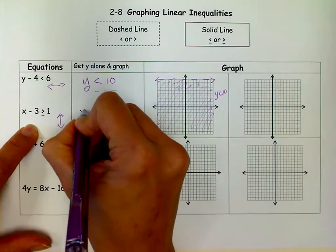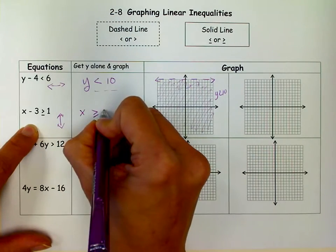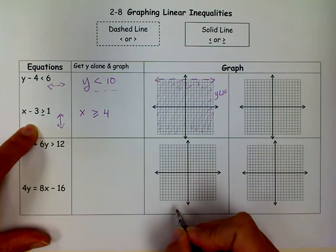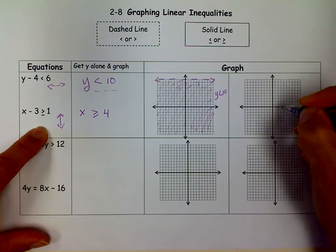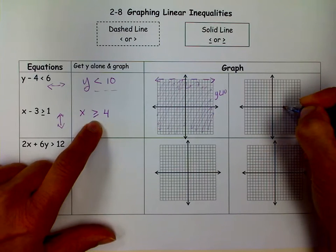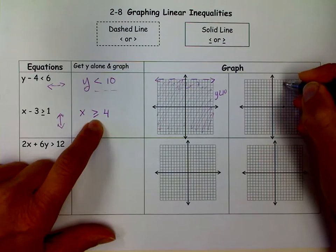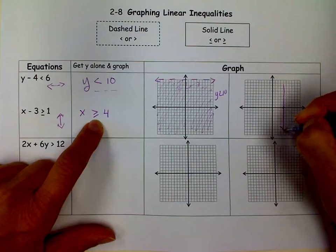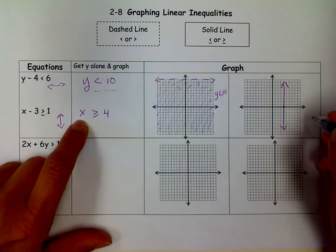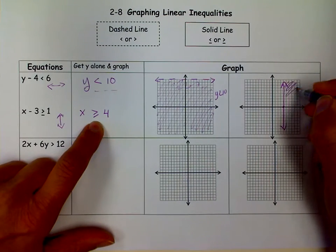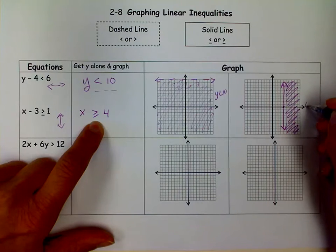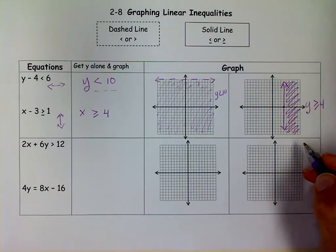Over here, we want to get X alone, so we add 3 to both sides. When we add 3 to both sides, we get X is greater than or equal to 4. So I go over to 4, and this is going to be a solid line because of that or equal to. So I make my solid line. Then X is greater than or equal to that, which is everything over here.